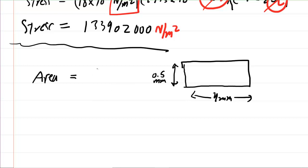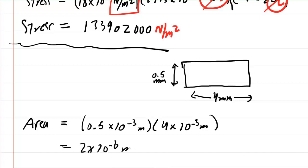Just make sure that you convert into standard units of meters. So we're going to take the half of a millimeter, multiply that by 10 to the power of negative three to get it into meters, and then do the same thing with the four millimeters. Multiply it by 10 to the negative three to get it into meters. So let's multiply this out. And when we do so, we will see that the area is 2 times 10 to the negative 6 meters squared.